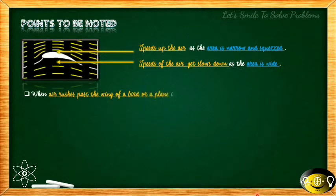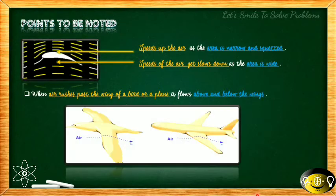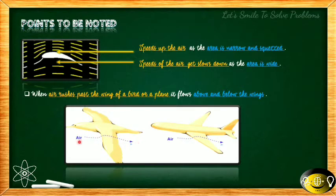When air rushes past the wing of a bird or a plane, it flows both above and below the wings. This is the topic of today's comparison between bird flying and aircraft. For both the aircraft and the bird, air rushes above the wings as well as below the wings — this is a similarity shared by both.